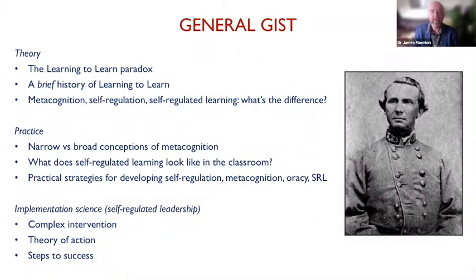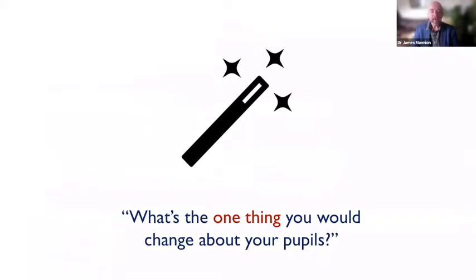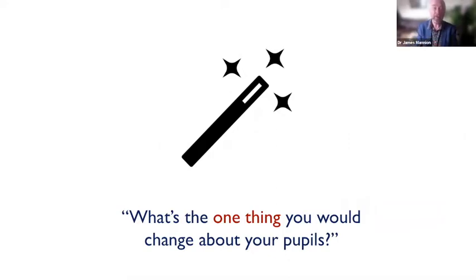Let's start with a question. Please use the chat box throughout this talk - there are going to be a few stopping-off points and pauses. I want you to contribute your ideas. If you have any questions that arise, or just want to note something I said, please light up the chat box. My question is: if you could wave a magic wand and change one thing about your pupils, what would it be?